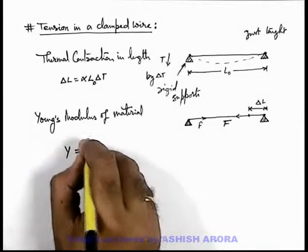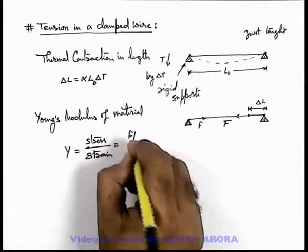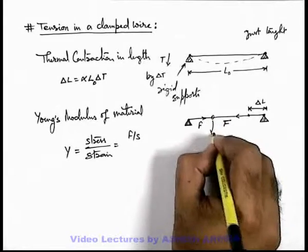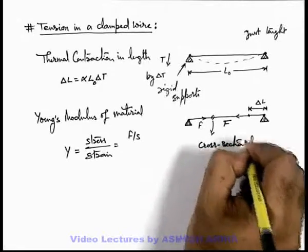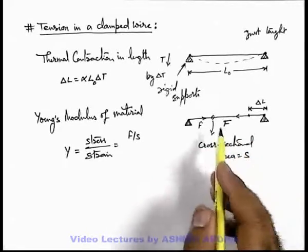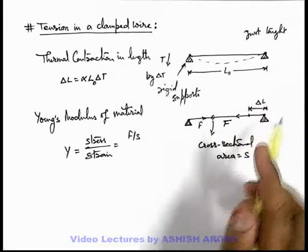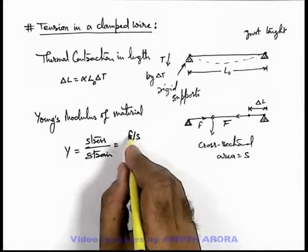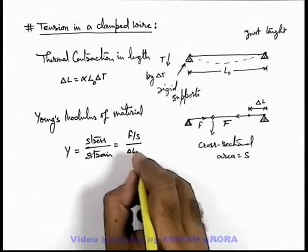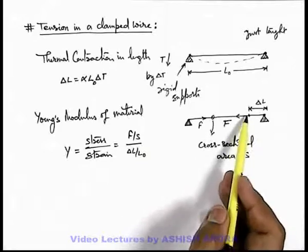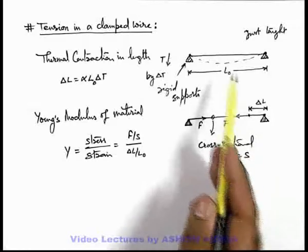Young's modulus can be written as stress by strain. So in this situation, stress can be written as F upon S, where S is the cross-sectional area of the wire. So the stress developed in the wire due to elastic elongation is F by S, because F is the tension developed due to elastic elongation. And strain can directly be written as delta L by L naught, or you must consider the initial length to be L naught minus delta L, which can be approximately taken as L naught.